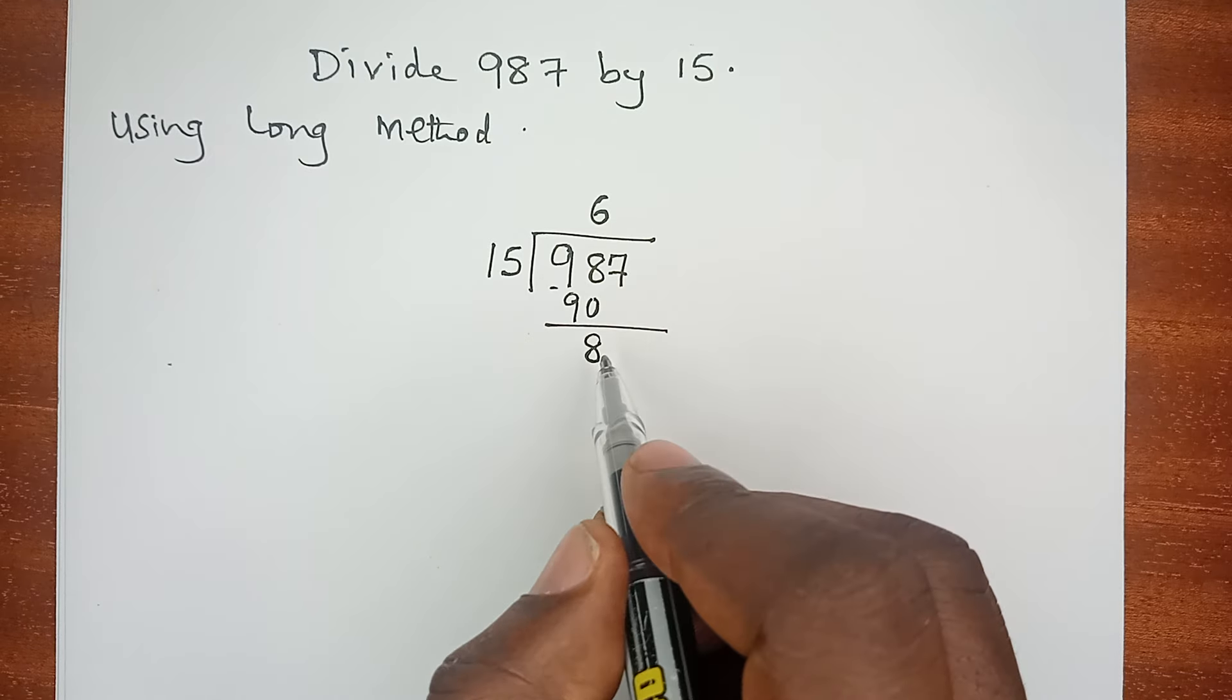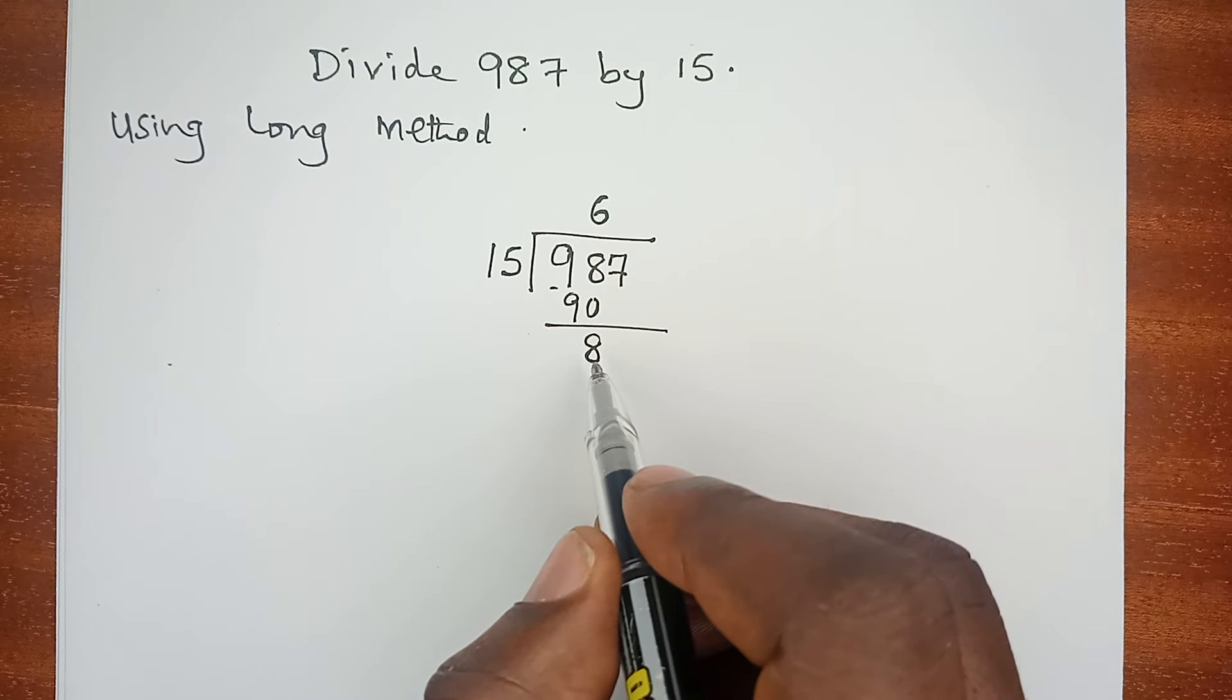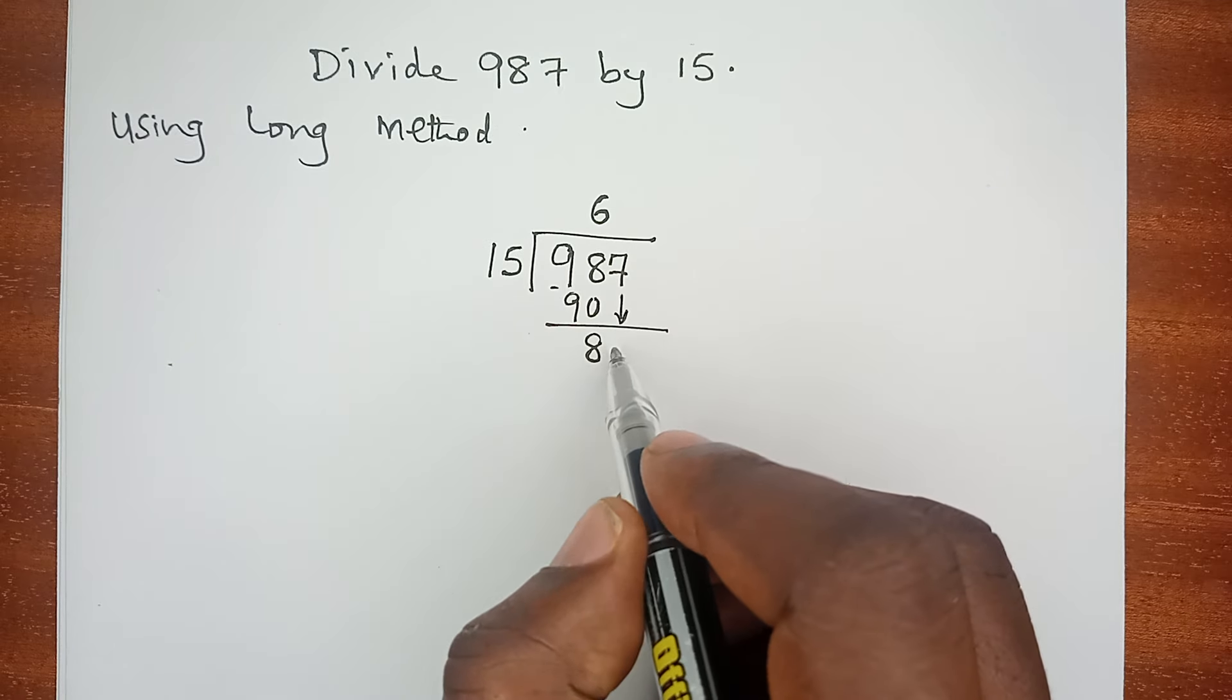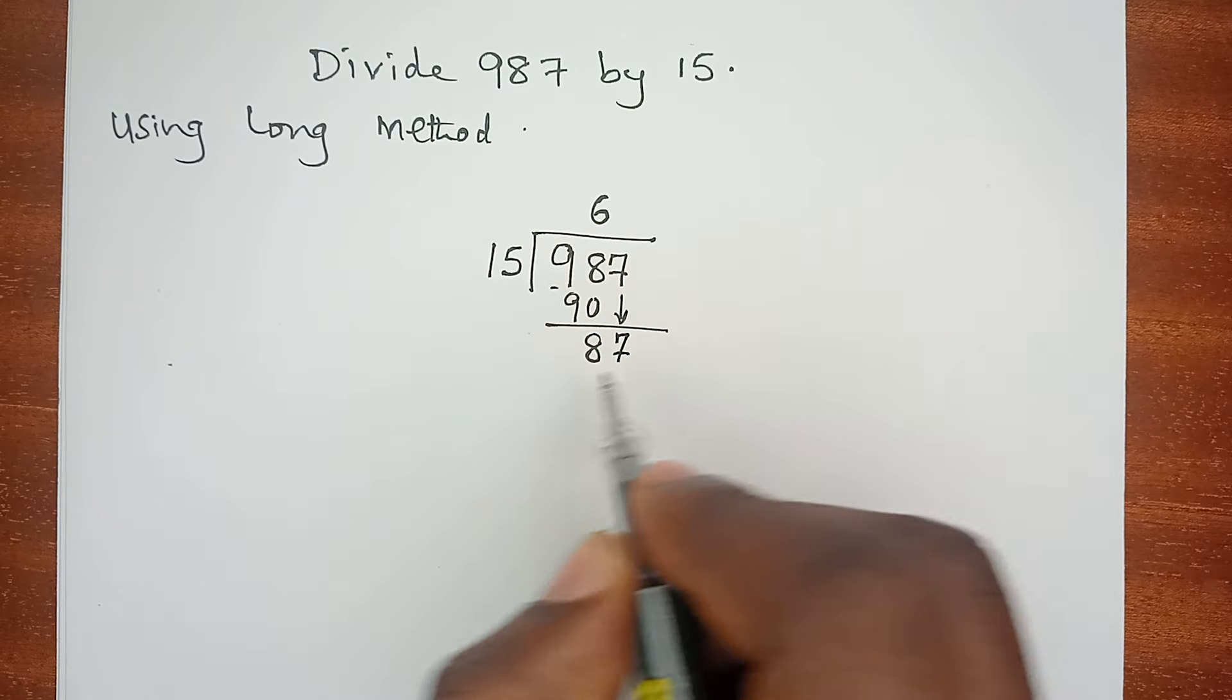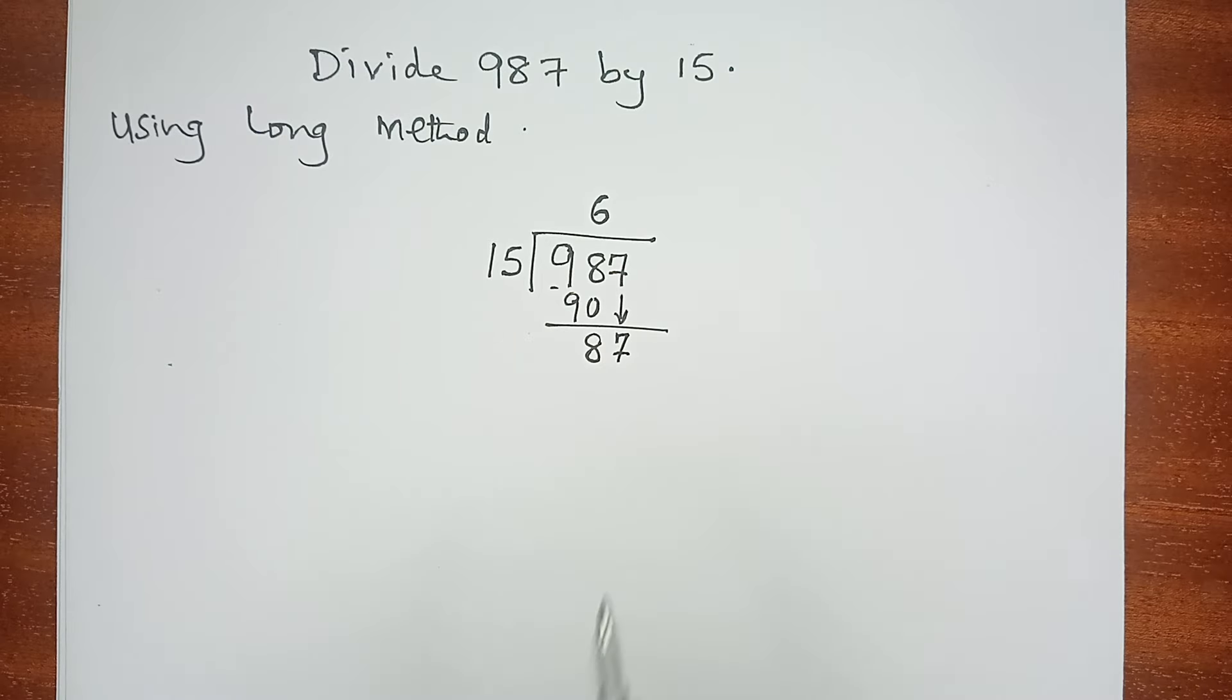Now, since 15 cannot go into 8, we drop the 7 and make this 87.